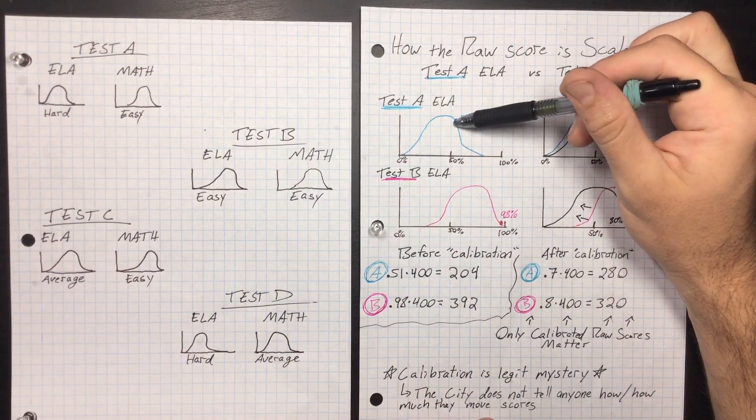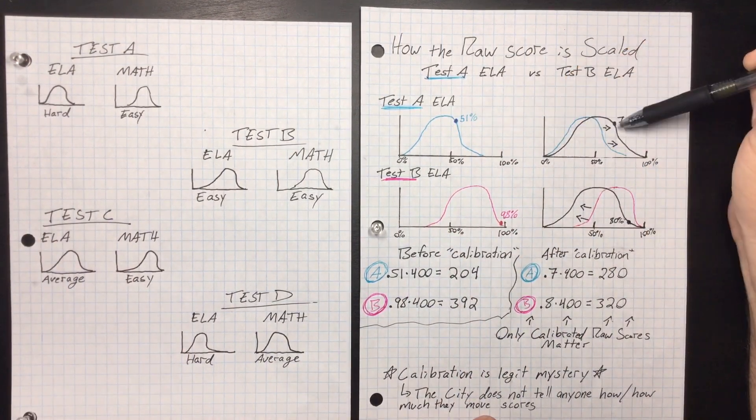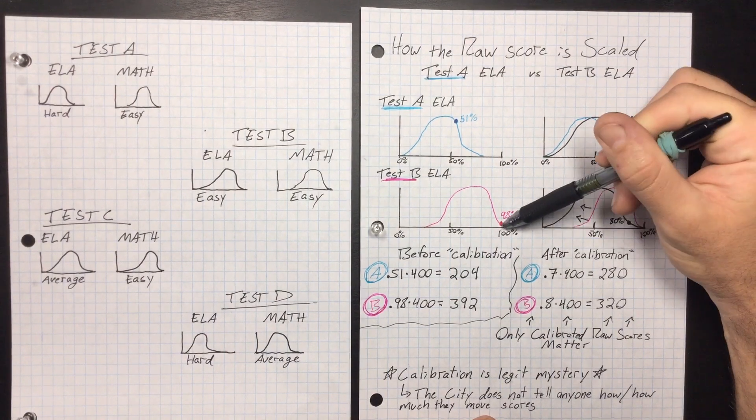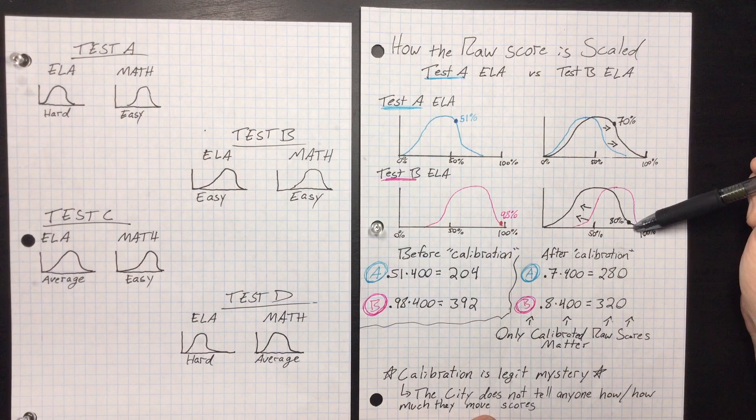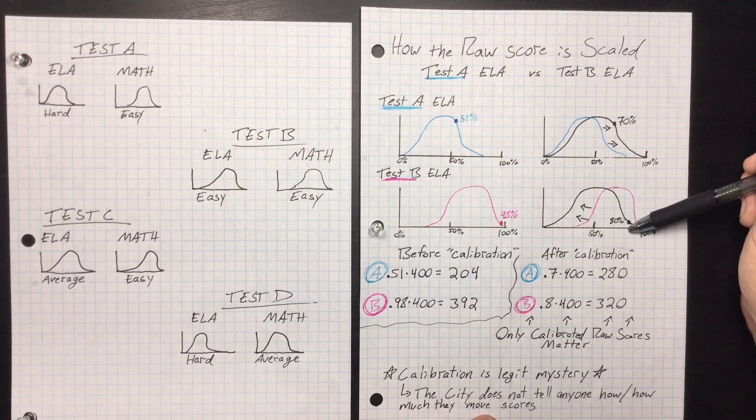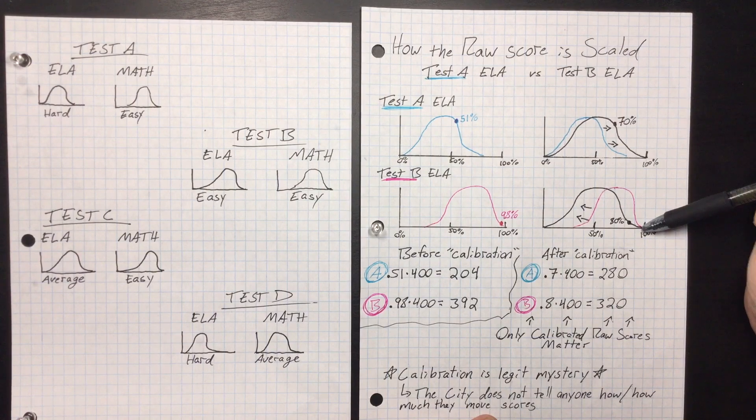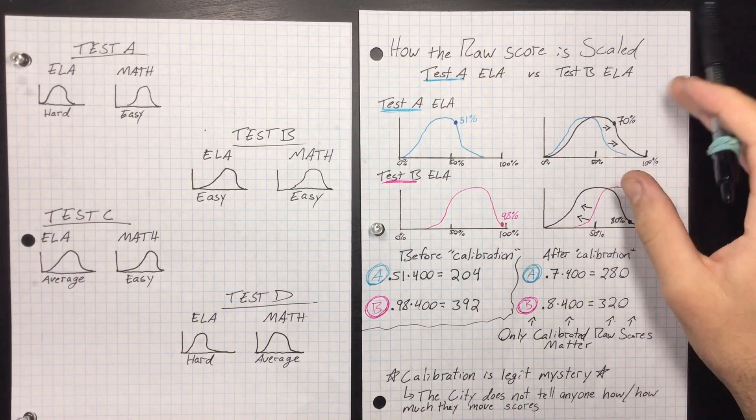So that's why it is much more of a competition against your classmates than it is get a certain percent correct. Because if you look here, you're above average, and you're still above average. Look up here, you're way close to the top percentage, and you're still way close to the top percentage. Not that many kids are going to have scores between 80 and 100. So that's how they do the calibration.